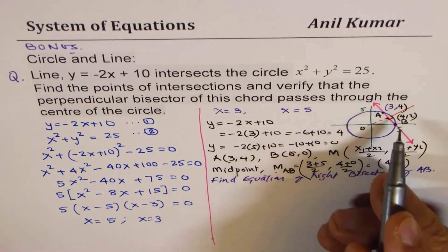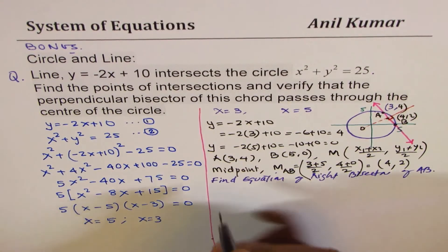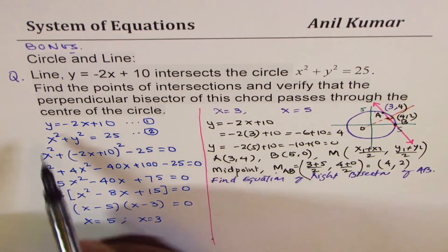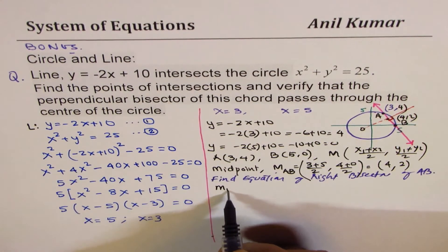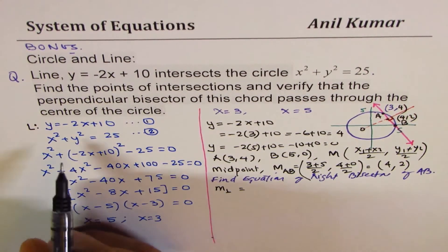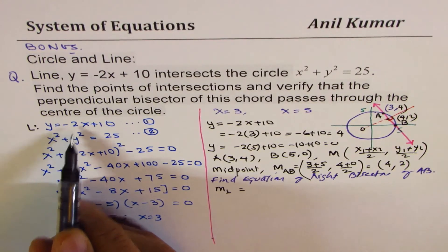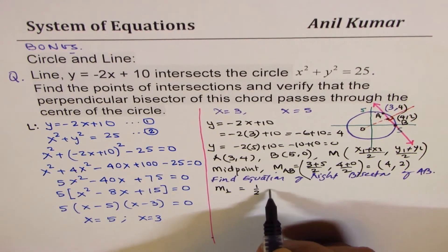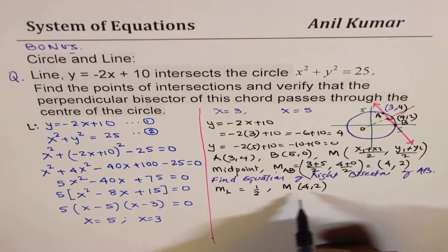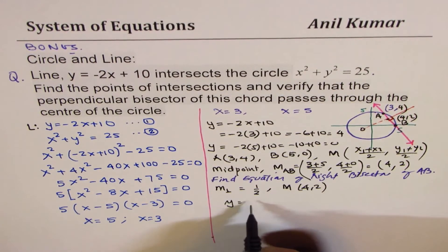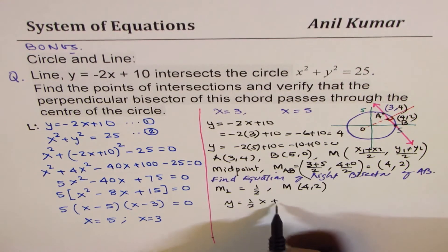That means we need to find slope. The perpendicular slope will be—see, the equation of the line is given here. So perpendicular line slope will be the negative reciprocal of minus 2, which is half. And the point is the midpoint, which is 4, 2.